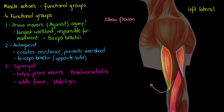Using the brachioradialis as an example: it has its origin on the humerus and its insertion on the radius. The bicep's insertion is also on the radius, meaning these two muscles on the same side of the joint can help each other and move together for elbow flexion. Additionally, the brachioradialis overlaps the bicep as it passes onto the radius, meaning it can stabilize and prevent the bicep from accidentally rotating the radius. So it is a synergist in that it is adding force and stabilizing at the same time.